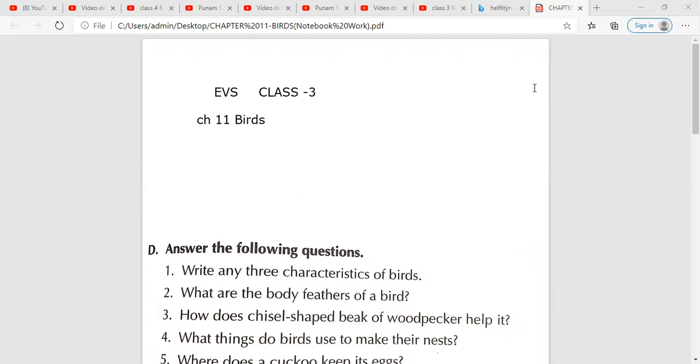So students, now after doing book exercise, that is question number A, B, C in your book, you have to do your exercise of book in your book only. Question number A, fill in the blanks. Question number B, encircle the odd one out. And question number C, give one example for each of the following. These three exercises you will do in your book only, on page number 88 and page number 89.